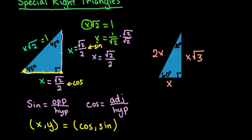When we are dealing with the unit circle, we know that the hypotenuse is going to be 1. So if we're trying to solve for x, we would set it up as 2x = 1, so x = 1/2.